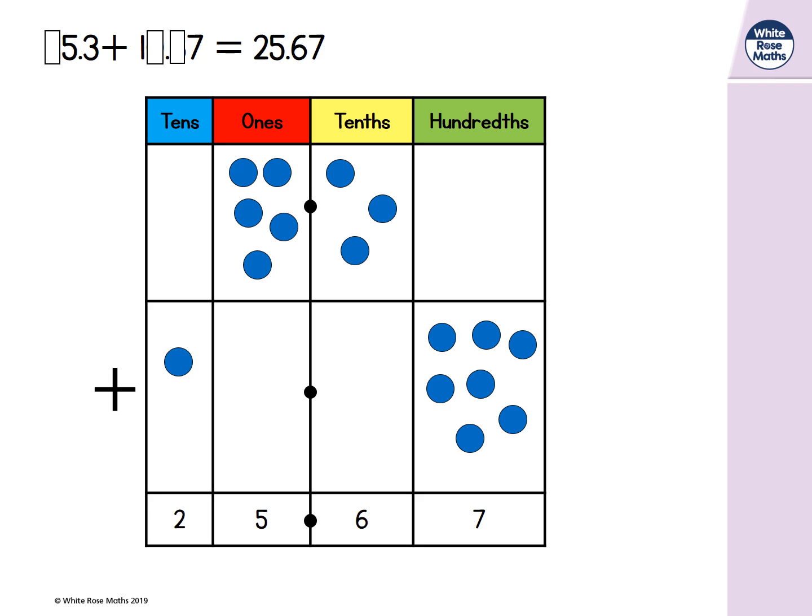Now let's look in our tenths column. There are currently 3 tenths, and the total is 6 tenths. So we need to add another 3 tenths. So the missing number of tenths is 3.